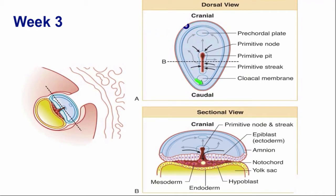It elongates along the head-tail axis. Now that we have polarity, we're already using that polarity — it will elongate along that axis. Furthermore, we see that the head end of the embryo is going to get wider than the tail end, because the head end is where the brain is going to develop, so we need that end to be bigger. So the head end gets wider — that's the shape of the embryo at this point.